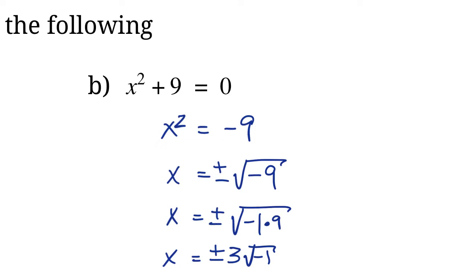We can actually remove that 9 from underneath the square root, because the square root of 9 is just 3. So it's plus or minus 3 times the square root of negative 1. And again, you might say we can't take the square root of negative 1 — if you try that in your calculator, you're going to get an error. And the key here is that there are no real solutions to this problem.